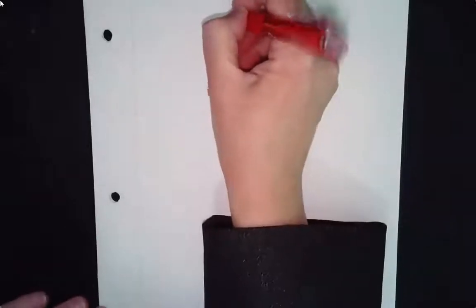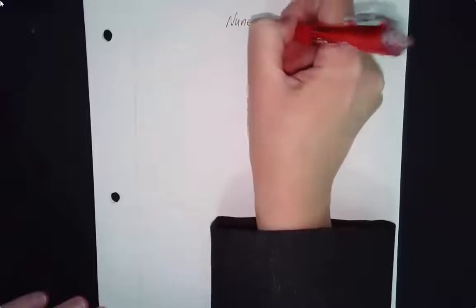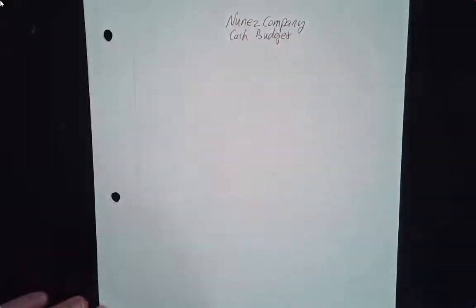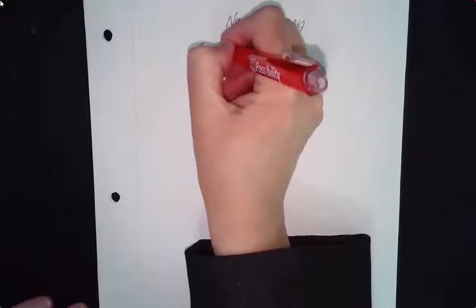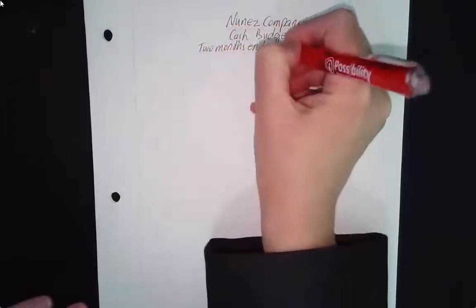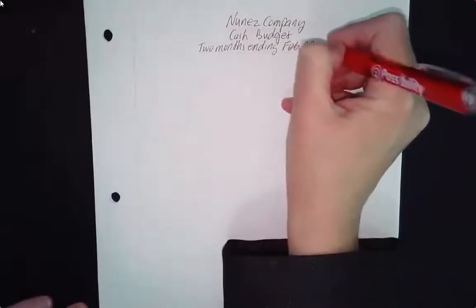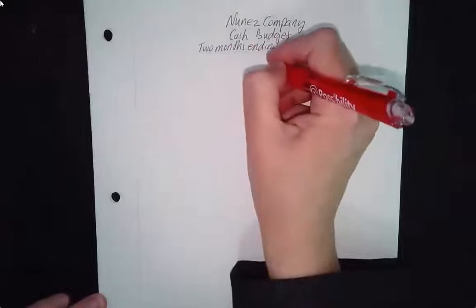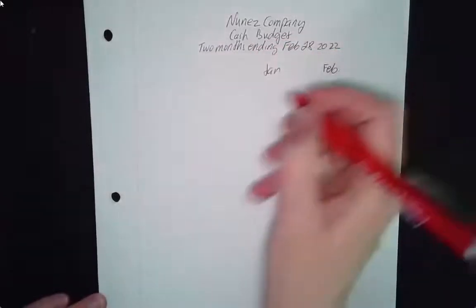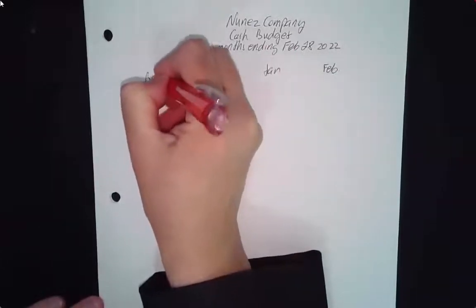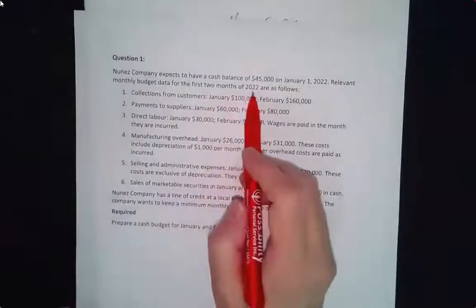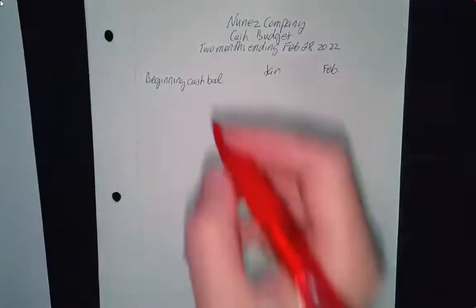We're going to start with the company name and set up the cash budget for the two months ending February 28th, 2022. We'll have columns for January and February. We start with the beginning cash balance — that has to be given to you. The question stated they expect $45,000, so we know that's the beginning cash balance for January.